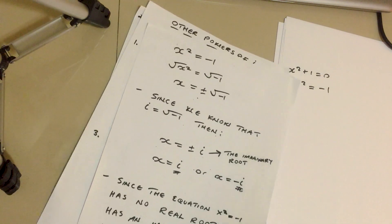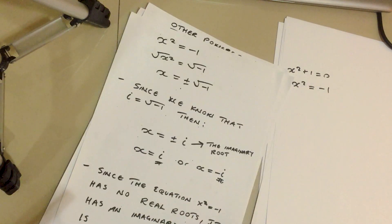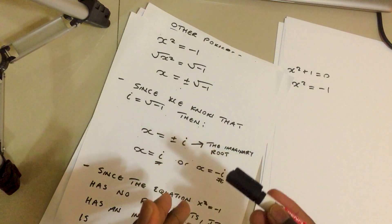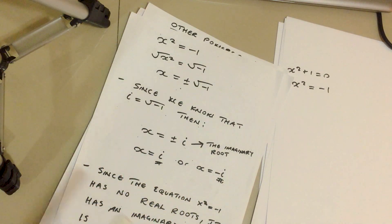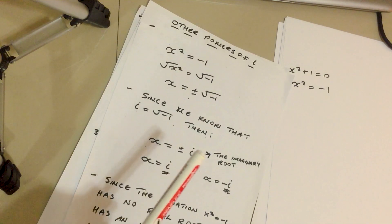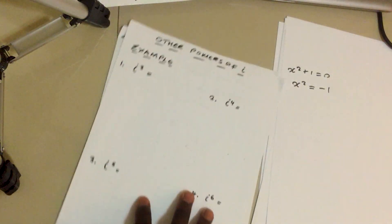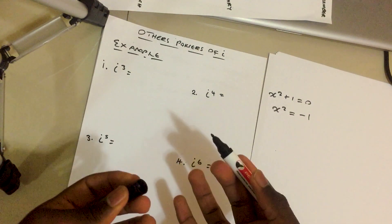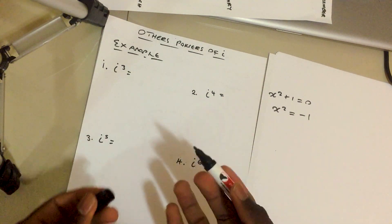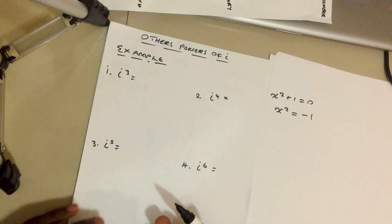Now we can look at the other powers of i. We know that i equals the square root of negative one and i squared equals negative one. But what about higher powers such as i to the power three, i to the power four, i to the power five, and i to the power six? You're going to come across such questions during an exam, test, or quiz, so I'm going to show you how best to approach and find the right solution for them.